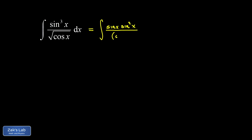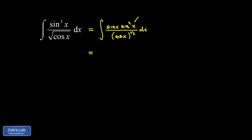I'm going to write the square root of cosine x as cosine x to the one half. The whole plan here is that sine squared can be written in terms of cosine — we apply the first Pythagorean trig identity, and sine squared is 1 minus cosine squared.